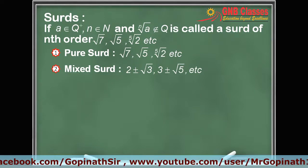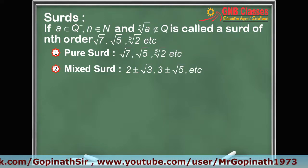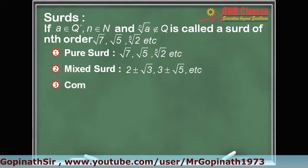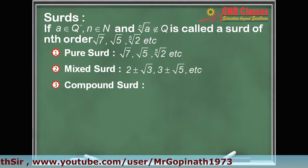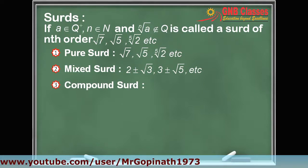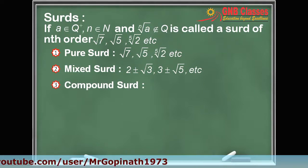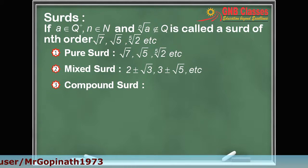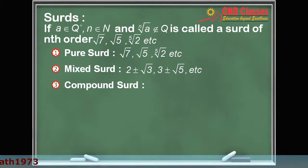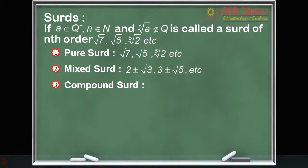The third kind is a compound surd. A surd which is the sum or difference of two or more surds is called a compound surd.